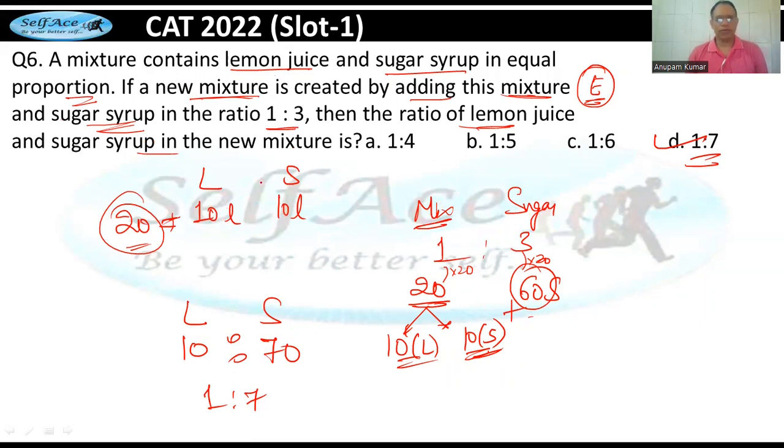To total 20 ho gaya. Is mixture ko 1:3 ke ratio mein mila rahe hain sugar ke saath, to 60 liter sugar aur daal do. 10 to ismein pehle se saath ho gai thi, to 70 liter sugar ho gayi aur 10 lemon hai. To 1:7 ka ratio aa gaya, which is option D. Very simple question.